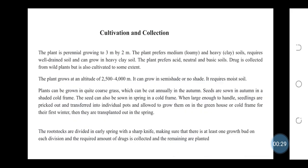Cultivation and Collection: The plant is perennial, growing to 3m by 2m. The plant prefers medium and heavy soils, requires well-drained soils, and can grow in heavy clay soils. The plant prefers acid, neutral, and basic soils. The drug is collected from wild plants and is also cultivated to some extent. The plant grows at an altitude of 2500 to 4000 m and can grow in semi-shade or no shade. It requires moist soil and plants can be grown in quite coarse grass, which can be cut annually in the autumn.